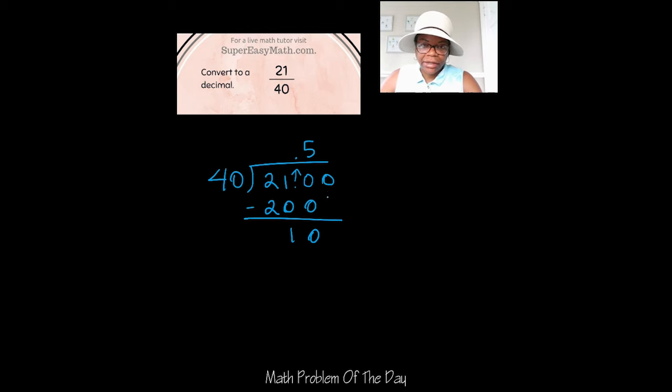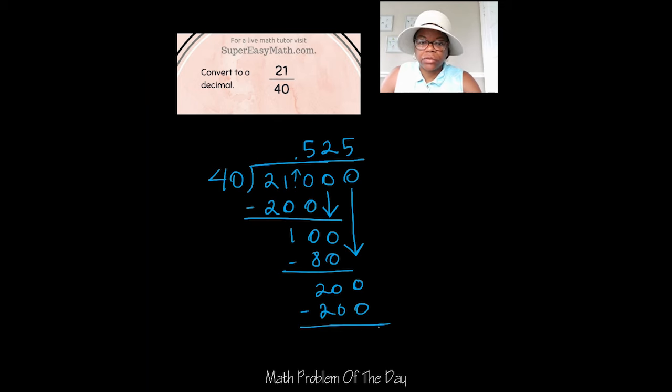Now I'm going to add another zero to bring down, and then I ask myself, how many times does 40 go into 100? And that would be 2, which is 80. I'm going to subtract and get 20. Add another zero, bring that down, and again we're dealing with the 5, and that goes in evenly, so when I subtract I get zero.